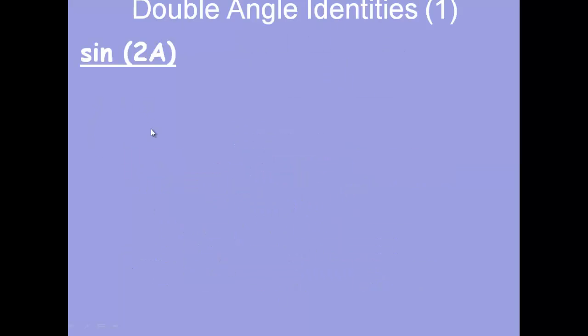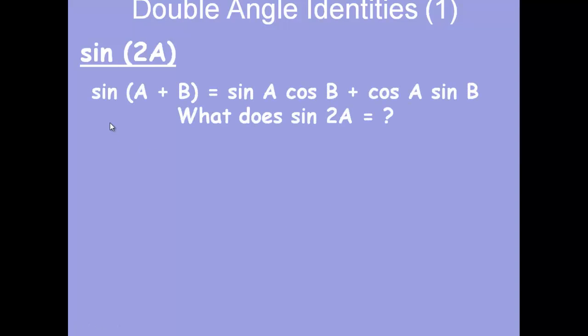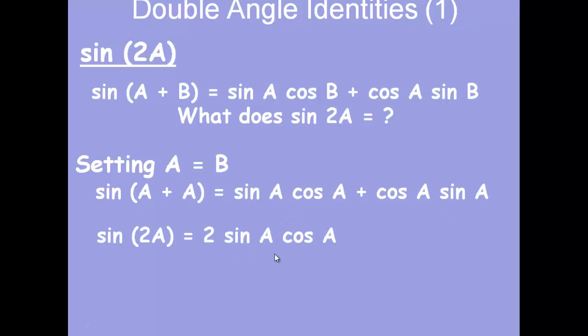We'll start off with sin. Looking at the addition formula, how can we use that to find a formula for sin of the double angle? Well, hopefully that was obvious. We just set A equal to B. This gives us sin A cos A plus cos A sin A. These two terms are the same, so we just end up with 2 sin A cos A.